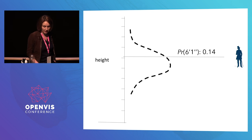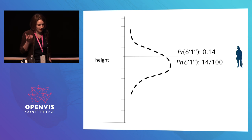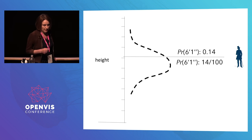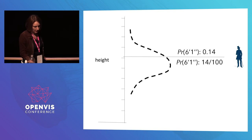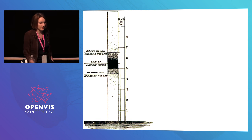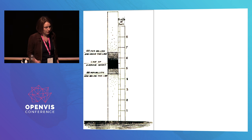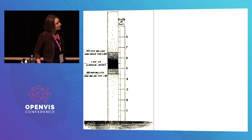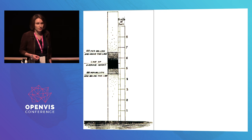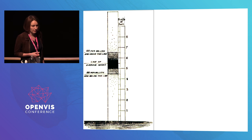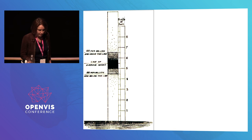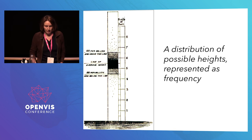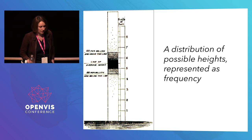Galton realized that if he communicated this as a frequency, people would get it, because probability is kind of abstract. So he thought: if we took 100 boys, 14 would be 6'1". He decided this is how he'd communicate it visually. So he draws a chart — a height scale with a bar next to it, drawing dots to show possible people. He draws a million dots, where the frequency of dots in a given region means that's how many people have that height. He annotates it. Height is not a perfect normal distribution, but that's okay — he basically discovered something really important.